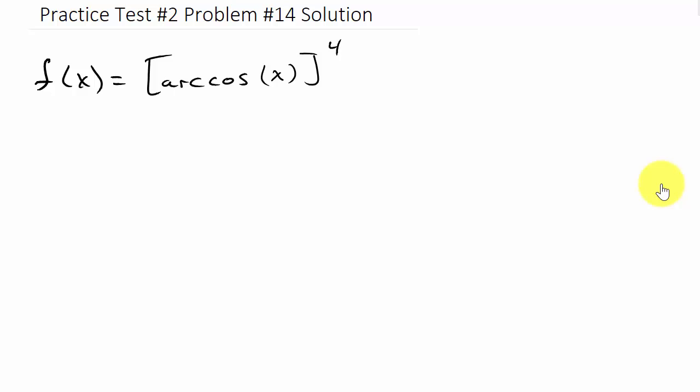Alright, so this is the second practice test for derivatives and this will be the solution of problem 14. Alright, so we've got f of x equals arc cosine of x, all that raised to the fourth power.